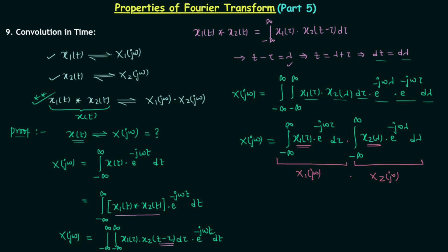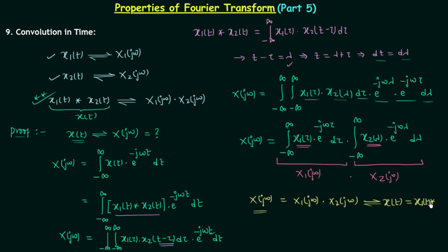Finally, we have the Fourier transform X(jω) equal to X1(jω) multiplied by X2(jω), where X1(jω) is the Fourier transform of x1(t) and X2(jω) is the Fourier transform of x2(t). So we have proved the convolution in time property of Fourier transform. This is all for this lecture; if you have any doubt you may ask in the comment section.